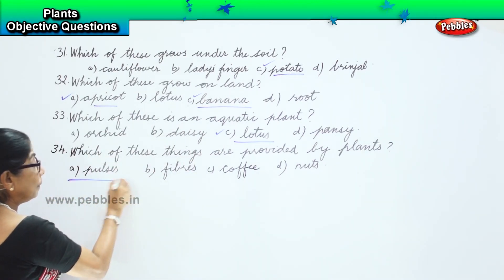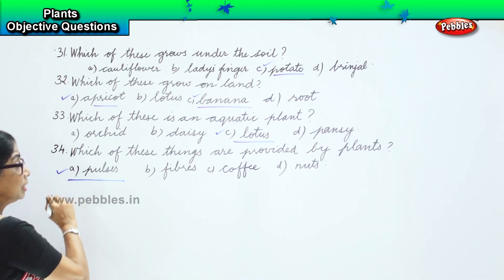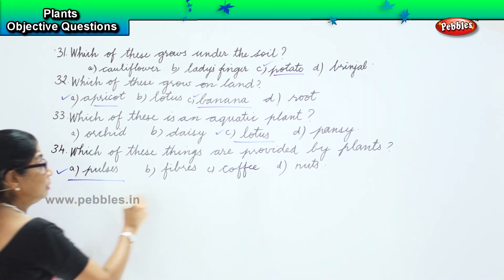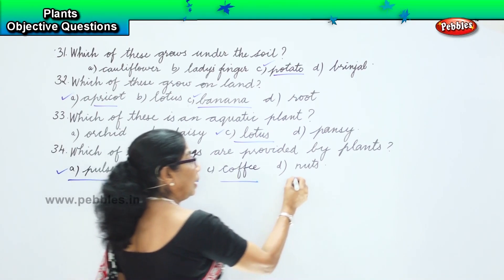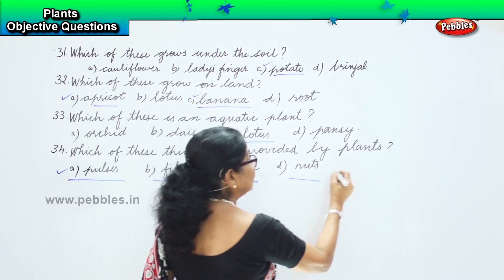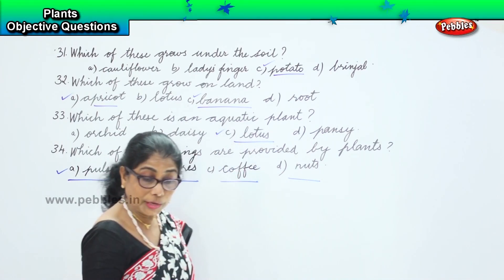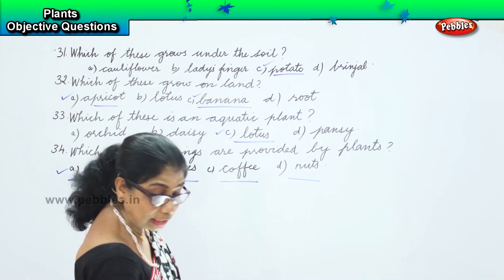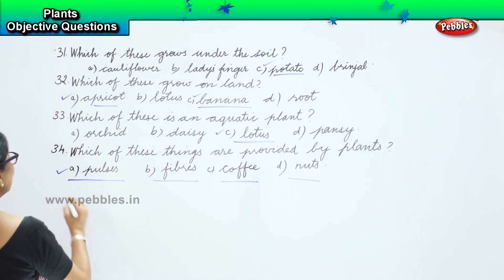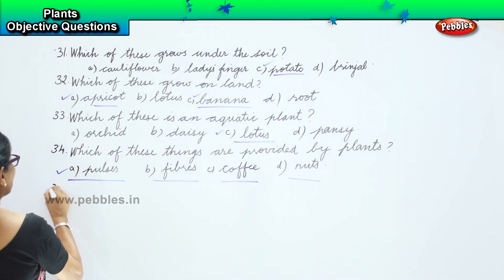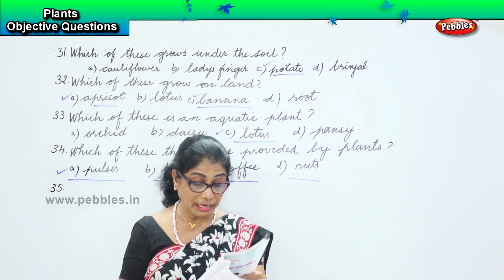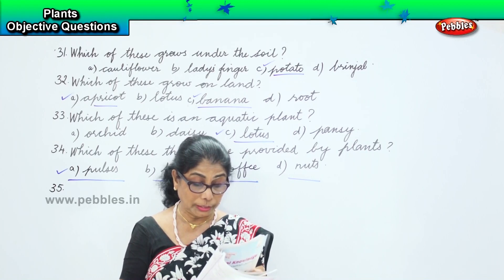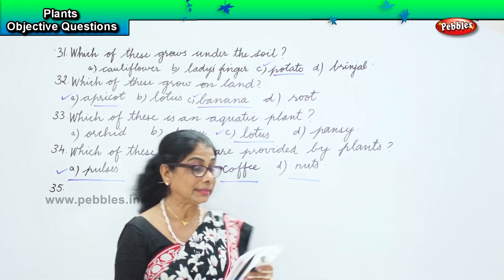All of these! You get pulses from the plant, you get fibres from the plant, you get coffee from the plant, and nuts as well. So all — pulses, fibres, coffee, and nuts — are all provided by the plant.